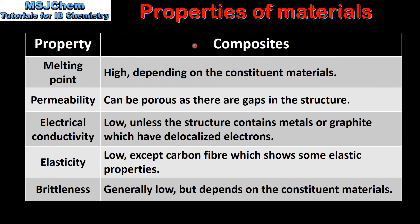And finally we have composites. Composites have high melting points depending on the constituent materials. They can be porous as there are gaps in the structure. The electrical conductivity is low unless the structure contains metals or graphite which have delocalized electrons. Elasticity is low except carbon fiber which shows some elastic properties. And brittleness is generally low but depends on the constituent materials.